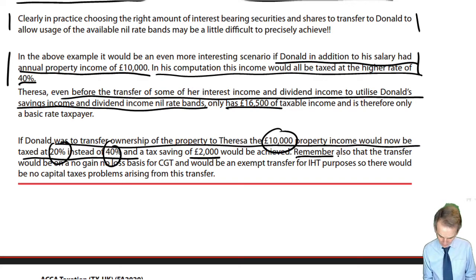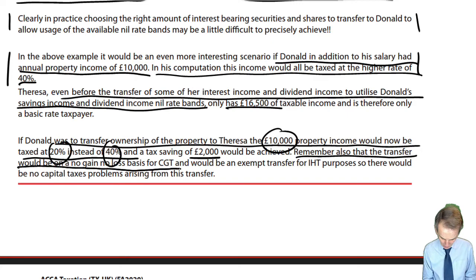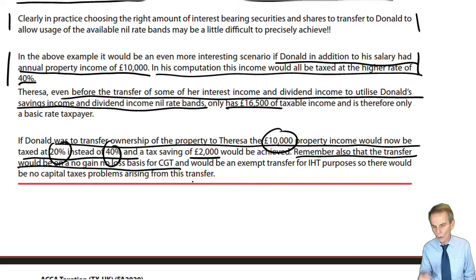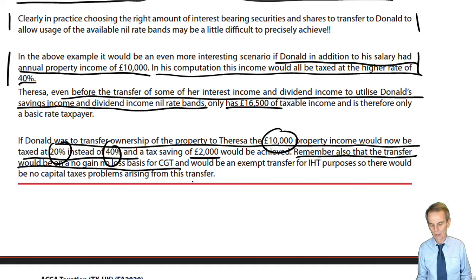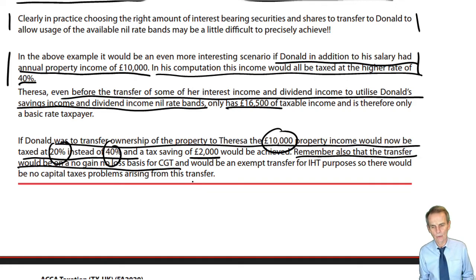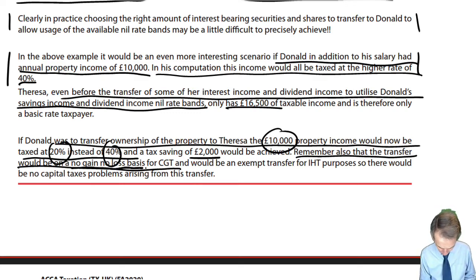A tax saving of £10,000 at the difference of 20% — therefore £2,000 — a much more significant number. Remember also, though we have not yet dealt with the capital taxes in any lecture, it would be a no gain, no loss basis for CGT, where it is a chargeable asset. Not all income-producing assets will necessarily be chargeable — cash in a deposit account is not a chargeable asset, but shares and properties are chargeable assets. Gains that would otherwise have arisen on transfer to a third party don't happen when it's a transfer between spouses or civil partners: no gain, no loss for CGT and exempt for IHT.